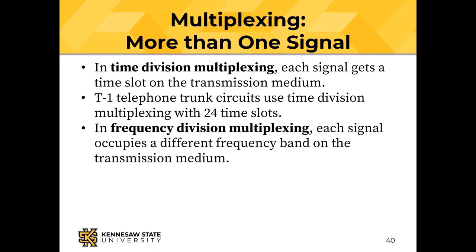In frequency division multiplexing (FDM), each signal occupies a different frequency band. Broadcast radio is FDM — all channels are present all the time and your receiver picks one. Broadcast TV and satellite radio work the same way.